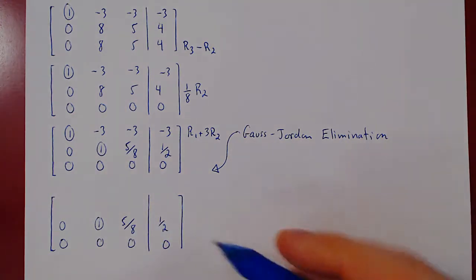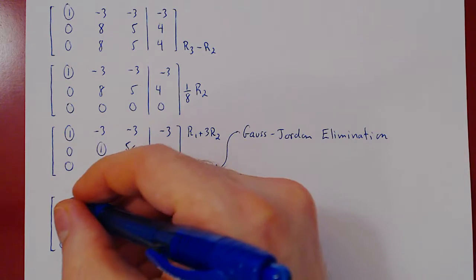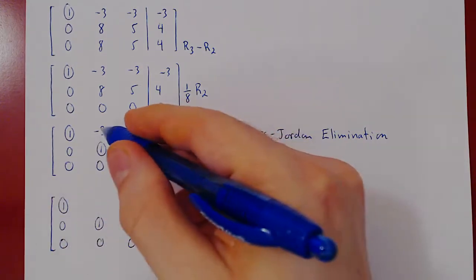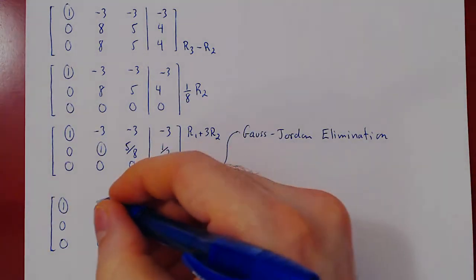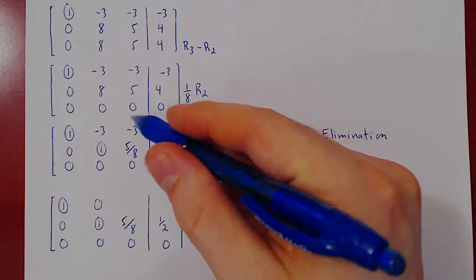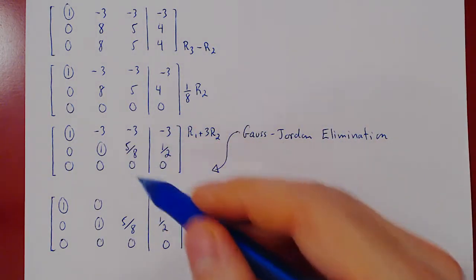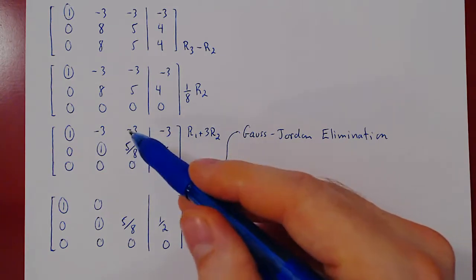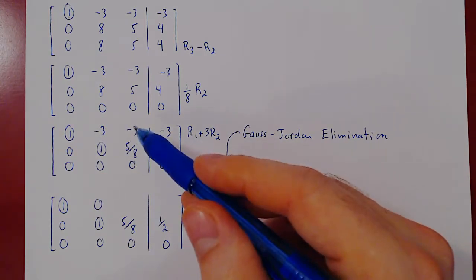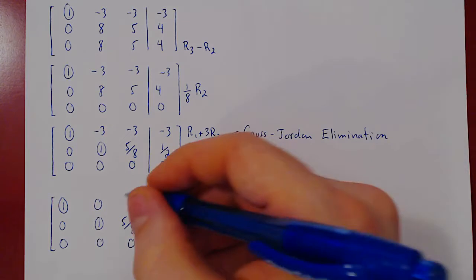And now we apply the row operation. 1 minus 0, 1. Negative 3 plus 3, 0. Now negative 3 plus 3 times 5 over 8, that's plus 15 over 8. But negative 3 is negative 24 over 8. Negative 24 plus 9, negative 19.